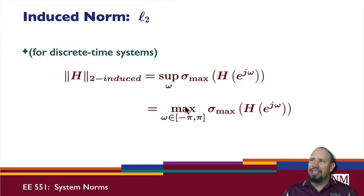So we can drop the supremum and use the max, and we can restrict our attention to minus π to π. We have the largest singular value, or basically the 2-norm of the transfer function evaluated on the unit circle.